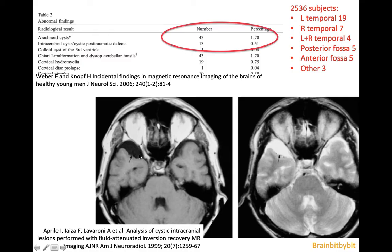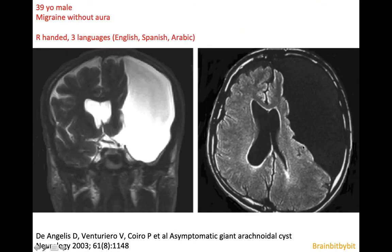Arachnoid cysts are extra-axial cysts filled with CSF, so they have low signal on T1, high signal on T2, and exactly the same signal intensity as CSF on FLAIR images. These T2 and FLAIR images are from a male patient with a very large arachnoid cyst interpreted as asymptomatic, because despite compression of the left hemisphere the patient had no language difficulties — he even spoke three languages.